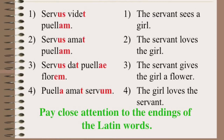The servant sees a girl. The servant loves the girl. The servant gives the girl a flower. And number four: the girl loves the servant.